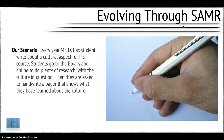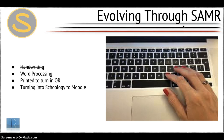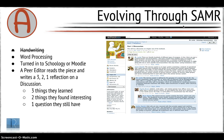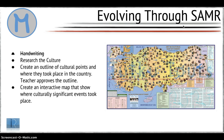In our SAMR example where we're researching a cultural aspect both in the library and online, and originally handwriting that paper, our substitution was substituting a word processing tool for the handwriting. Our augmentation was doing a peer edit on top of that in the 3-2-1 style outlined on the slide here. Our modification was creating an interactive map where I would place my information on the interactive points shown in the picture here.